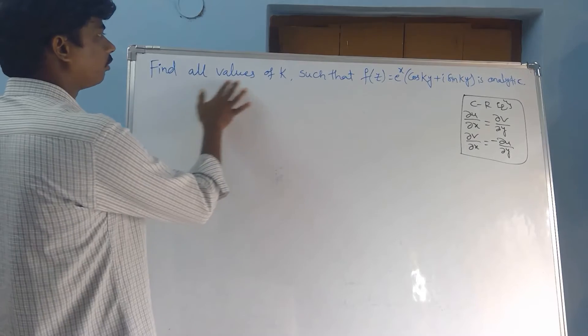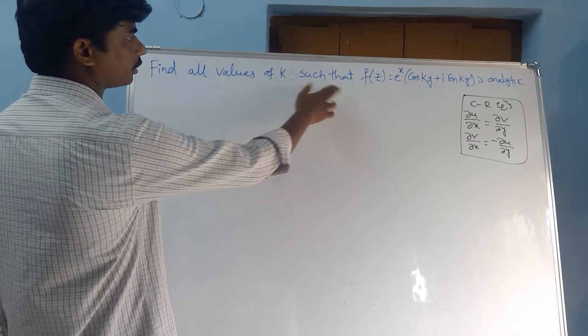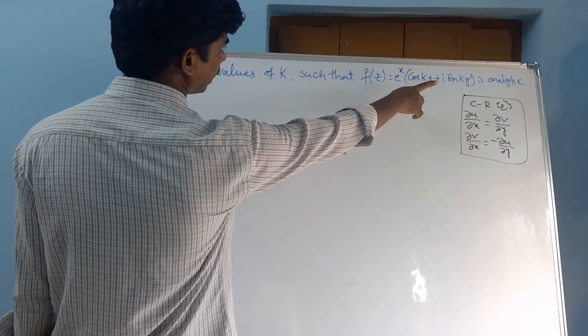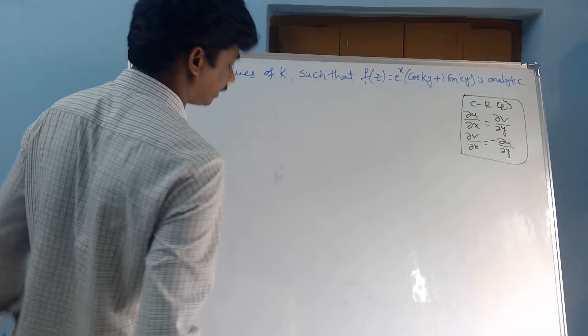See here, find all values of k such that f(z) = e^x · cos(ky) + i · sin(ky) is analytic.